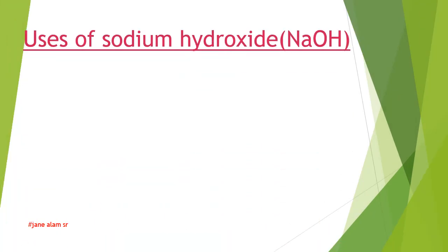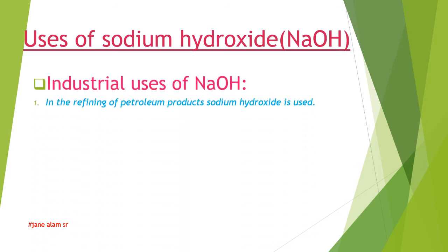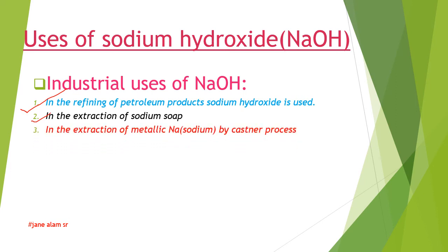Uses of Sodium Hydroxide (NaOH). Industrial uses. Number 1: In the refining of petroleum products, sodium hydroxide is used. Number 2: In extraction of sodium soap. Number 3: In extraction of metallic sodium by the Kastner process. Number 4: In the refining of coal tar products, NaOH is used largely.